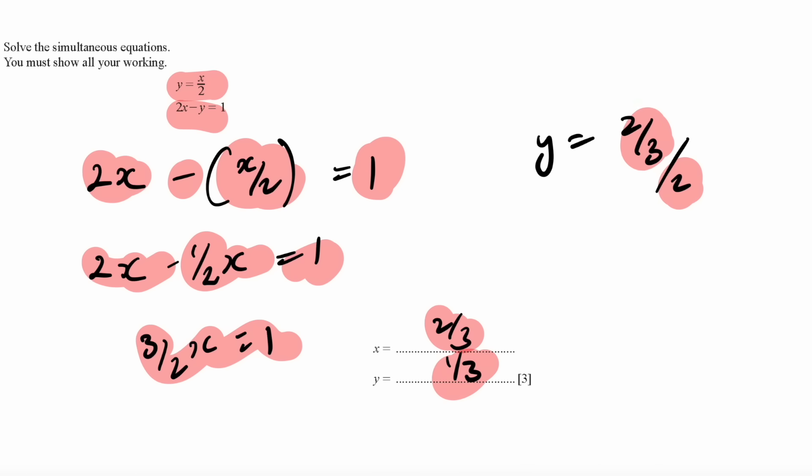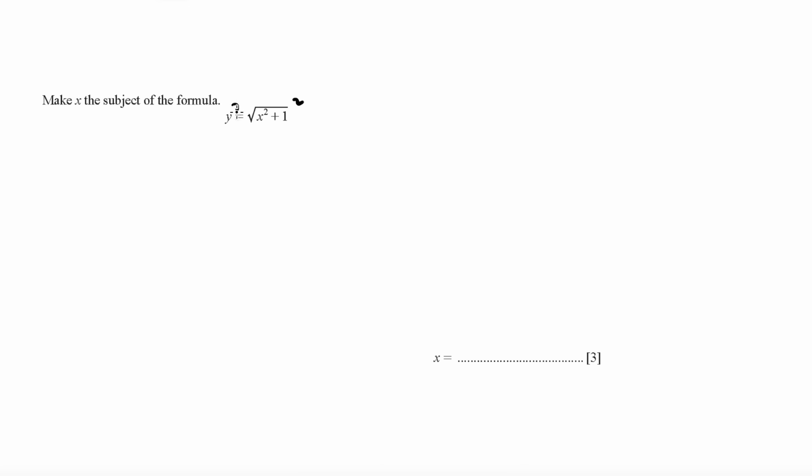For subject of the formula, you simply square both sides to get rid of the root, so y squared equals x squared plus 1. Take 1 to the other side: it becomes y squared minus 1. Then you root this: plus or minus equals x. Therefore, that is your answer.